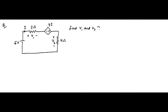Here is another question on KVL and KCL application with circuits involving dependent sources — dependent voltage or current sources. This is the circuit, and we have been asked to find the voltage drops v1 and v2 across the 2-ohm resistor and the 4-ohm resistor. Here we have a dependent voltage source — it is actually a current-dependent voltage source, where the voltage depends on the current capital I. We have to find v1 and v2. Let us redraw the circuit.